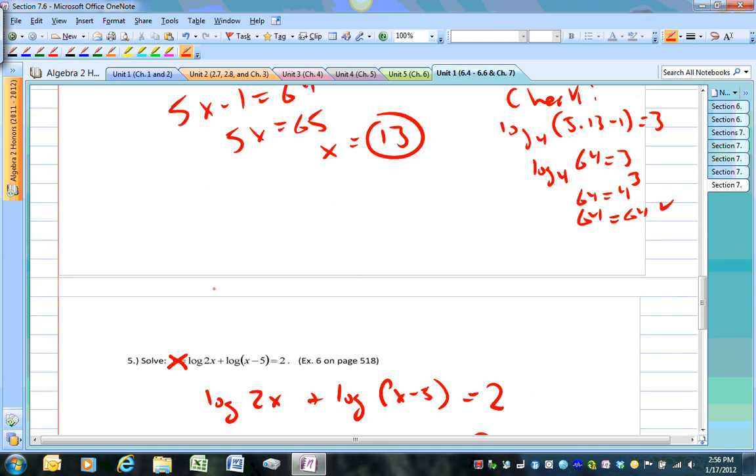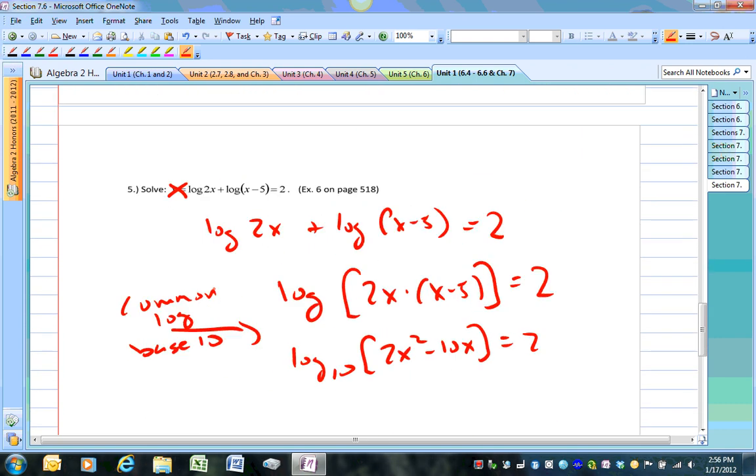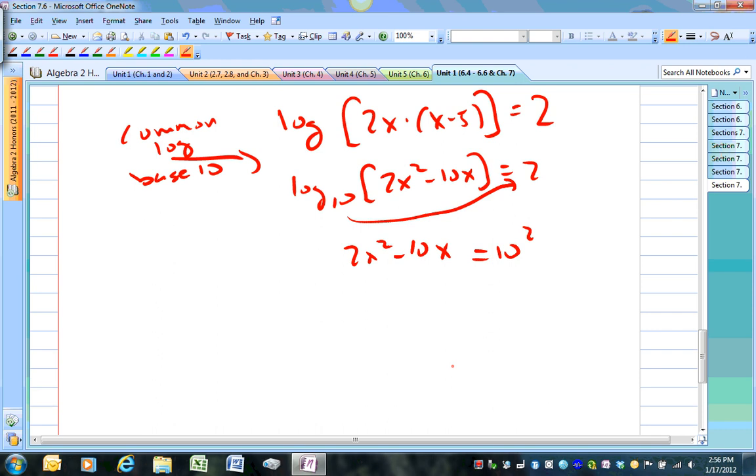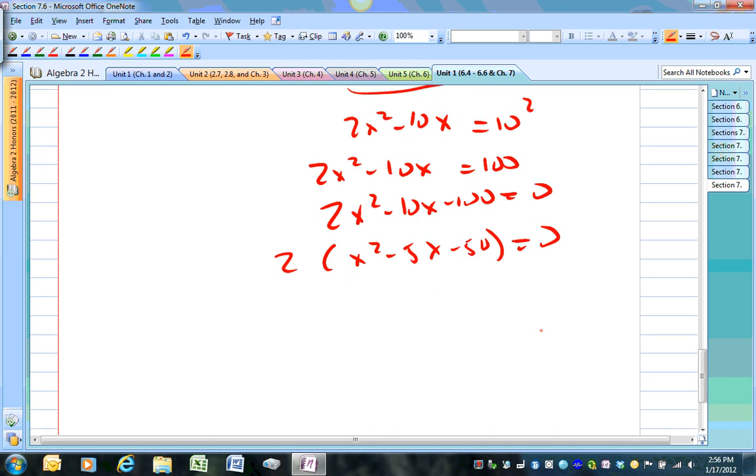And like we did in number 4, we rewrite it or shift it to the exponential form. So basically, this raised to that power will be on the other side. And we have 2x squared minus 10x on the other side. So we can work it out. 0 equals 100. Move it over. And we can solve by factoring. So we get 2 answers, 10 or negative 5.